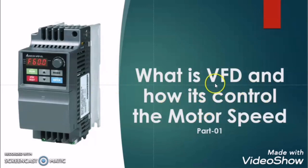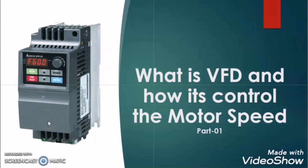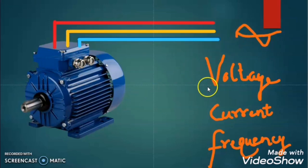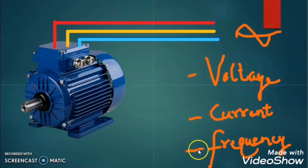In order to better understand the operation of variable frequency drive, it is very important to know what are the different parameters which are affecting the speed of the motor. If we know these, then we can understand the VFD operation very easily. Whenever we are giving power supply to the induction motor, this power supply will have three parameters: voltage, current, and frequency. It means we have to control these parameters in order to control the speed of the motor.